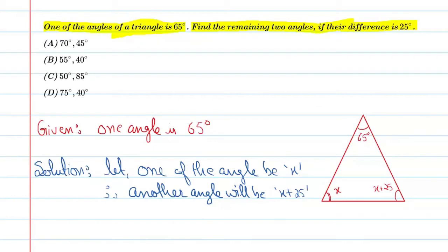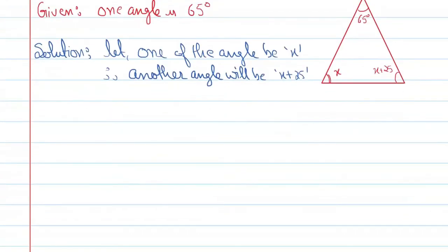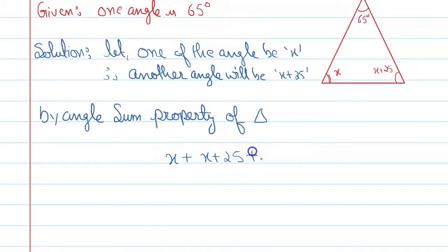So by angle sum property of triangle, you can say angle x plus x plus 25 plus 65 is equal to 180 degrees. This is equal to 180 degrees.